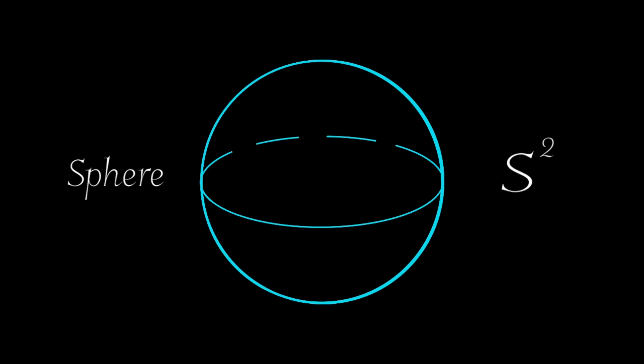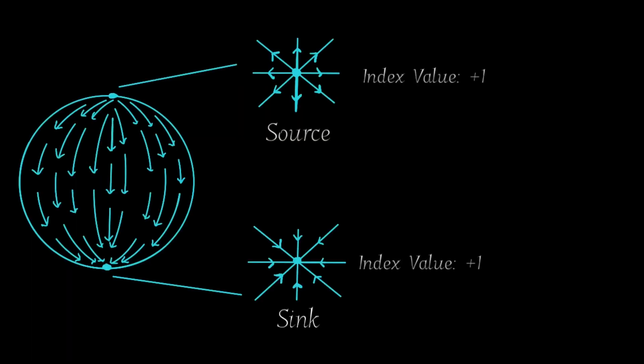We can check this by drawing the vector fields in a different manner. Now, creating a source and a sink. A source and a sink also have an index value of plus 1, giving us a total value of 2 again.